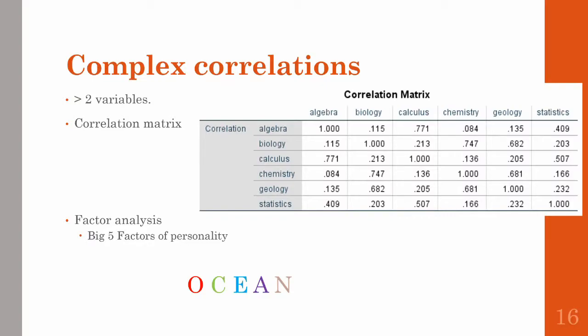A lot of research involves measuring not just two variables but a bunch of them — both categorical and quantitative. Complex correlations assess the relationships between them. You measure a bunch of variables and create a correlation matrix to look at all of them. For example, you might measure scores from students on algebra, biology, calculus, chemistry, geology, and statistics tests.